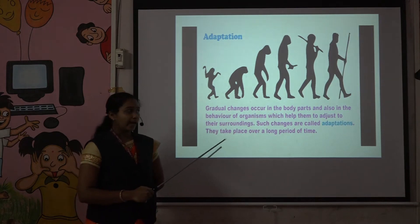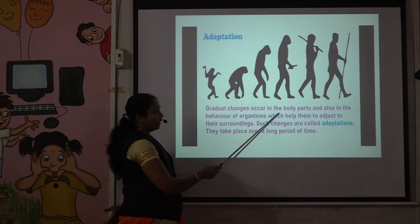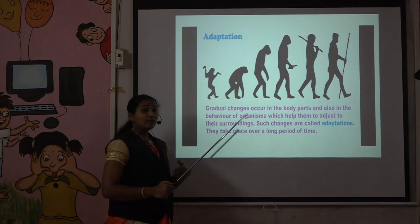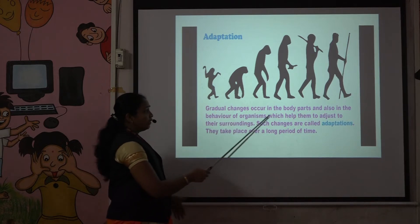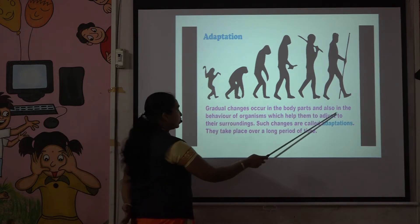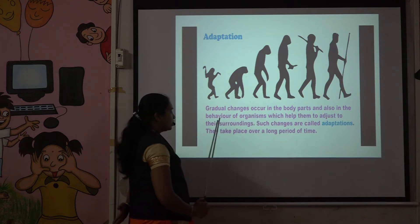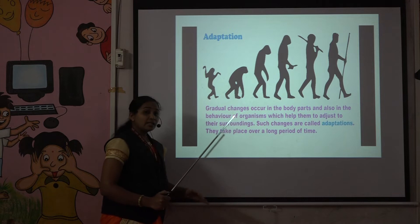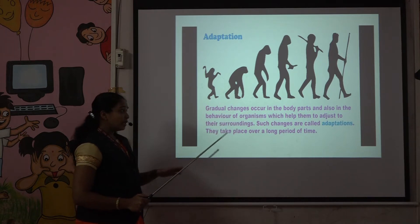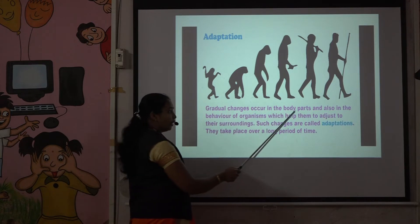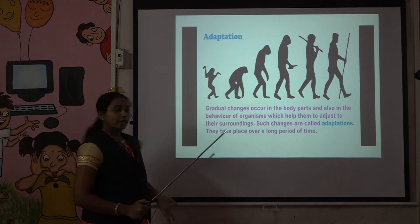Now let's talk about adaptation. Gradual changes occur in the body parts and also in the behavior of organisms, which help them to adjust to their surroundings — to adjust to that condition, that climate, that environment. These changes come very slowly in their body parts and behavior to allow them to survive.